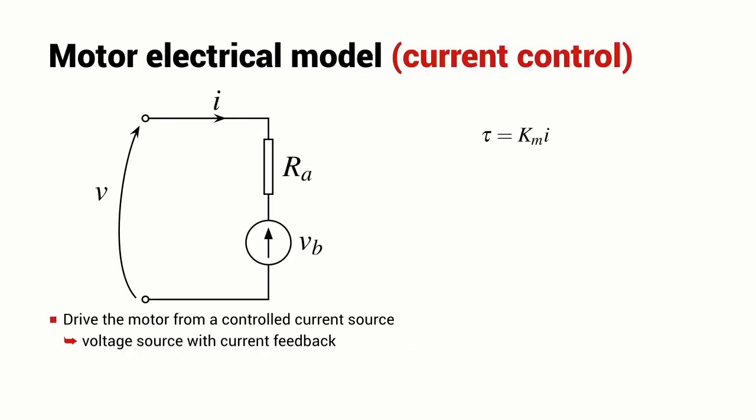An alternative way of controlling electric motor is to regulate the current that flows into the motor. There are many ways to create a controlled current source. A common way is to take a controlled voltage source and apply a current feedback loop. The torque generated by the motor is proportional to the current flowing through the motor.